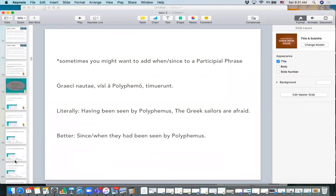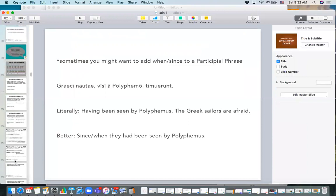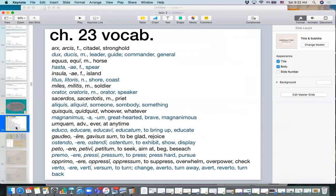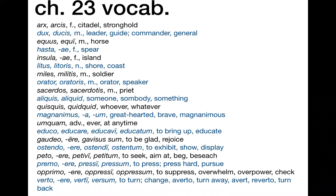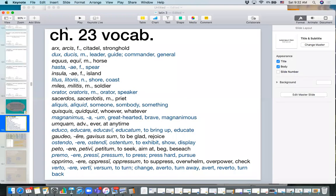The vocabulary words for this chapter are what you'll be quizzed on Friday. Some good ones: arx meaning citadel, dux meaning leader — which looks like duca, ducra — equus meaning horse, hasta meaning spear, insula meaning island, and so on. We have one adjective, magnanimus, meaning brave — almost like magnus. And then there are a bunch of verbs they're going to play around with in terms of forming participles out of them. All right, thanks for watching — maybe I'll add a part two, maybe not.